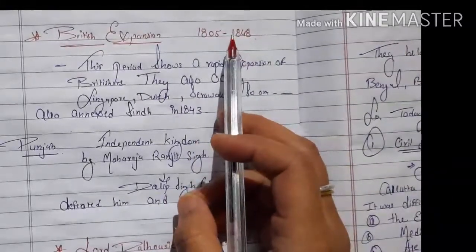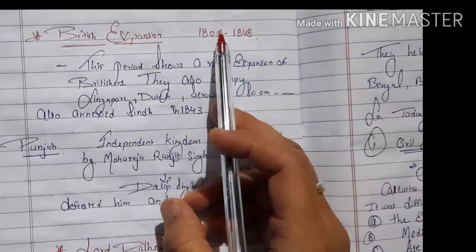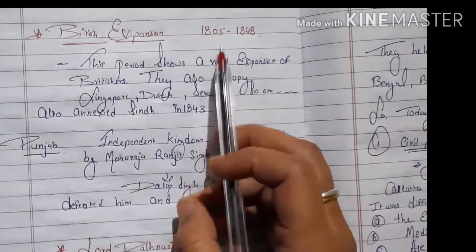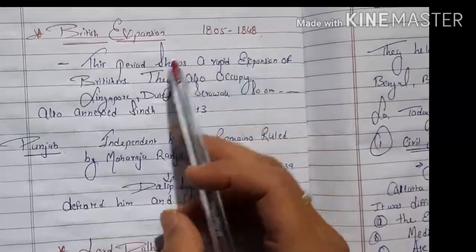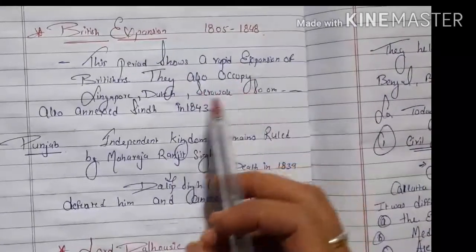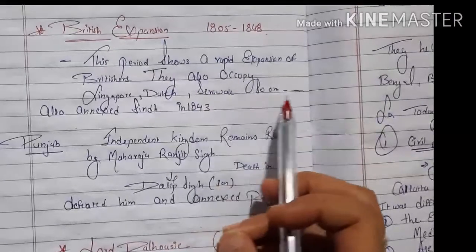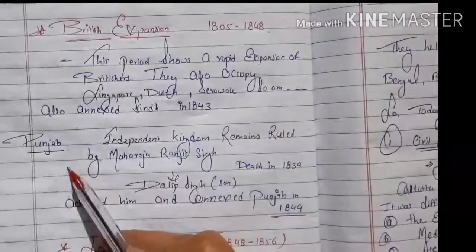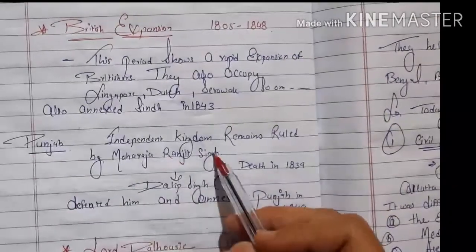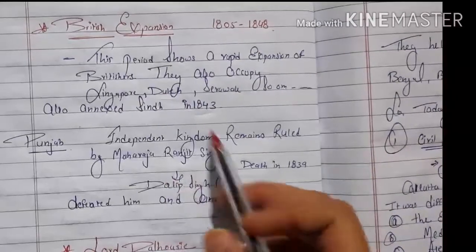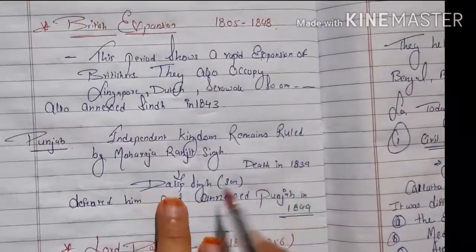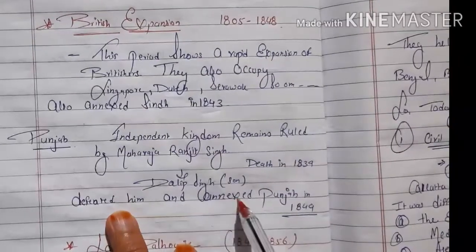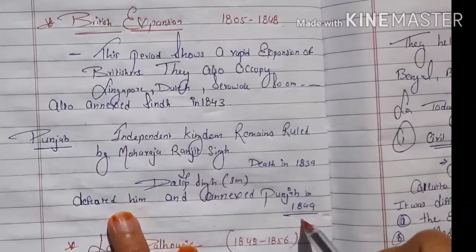As covered in the first video, British expansion reached Punjab and everywhere. From 1805 to 1848, there was rapid expansion — they occupied Singapore, Dutch territories, Sri Lanka, and annexed Sindh in 1843. Punjab remained an independent kingdom ruled by Maharaja Ranjit Singh's son. After Ranjit Singh's death in 1839, Dilip Singh became the head of Punjab, but was defeated by the British, and Punjab was annexed in 1840.